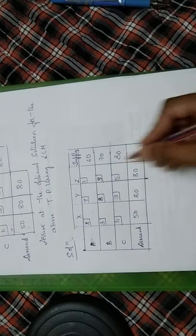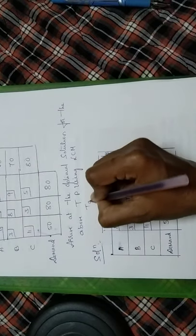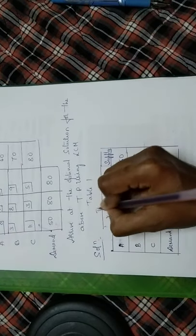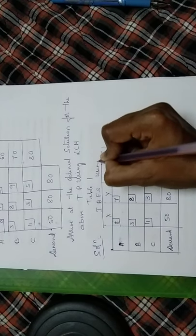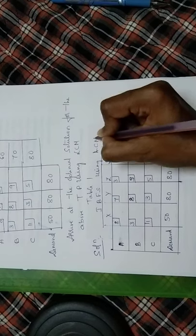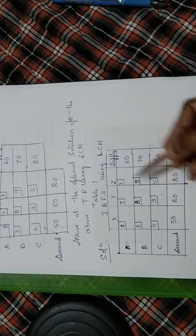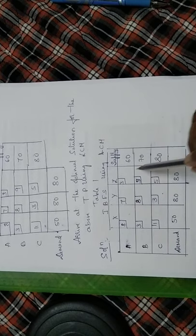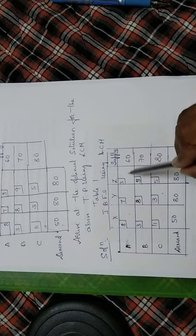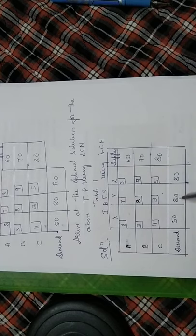I have taken up the cost matrix. Table one: initial basic feasible solution using LCM method, that is Least Cost Method. The first least cost is 3 and 3. When you have two values which are least, we go by that cell where I can allocate the maximum. Here if I go I can allocate 60, if I go here I can allocate 80, so I will go with this cell.